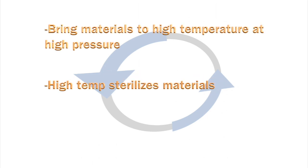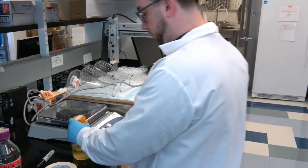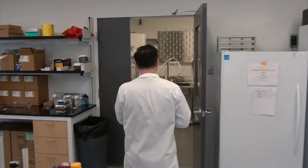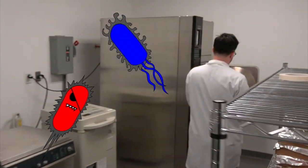Autoclaves are used to bring materials and media to high temperature at high pressure. The high temperature sterilizes our materials while the high pressure keeps liquids from boiling over. Some organisms and certain spores can, however, survive in the harsh conditions of the autoclave. Be sure to check the literature for the appropriate sterilization techniques if you are working with any weird and wonderful organisms.